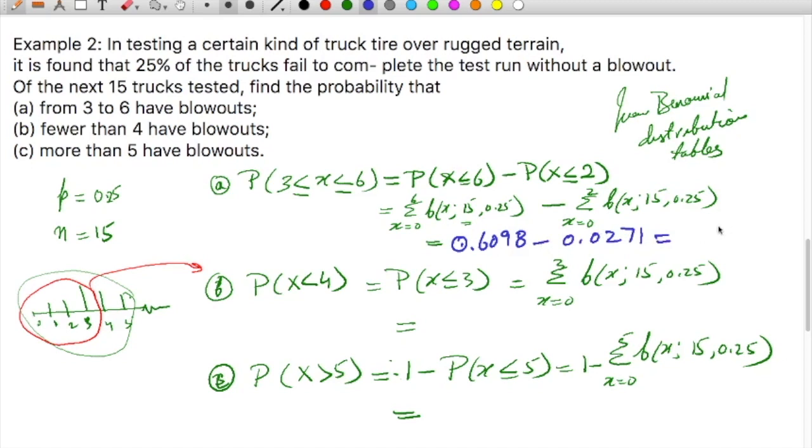That will give us the probability of 0.7073. This is the probability of getting 3 to 6 blowouts. For part (b), this will be 0.4613. And for part (c), 1 minus 0.8516 equals 0.1484. That is the probability.